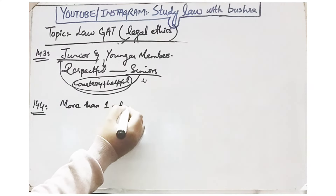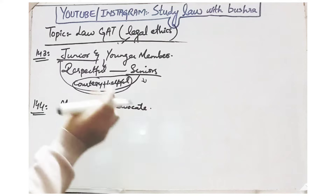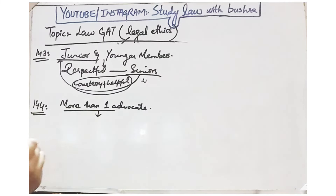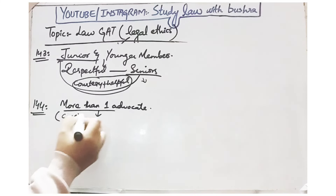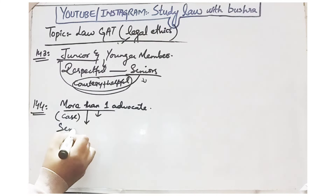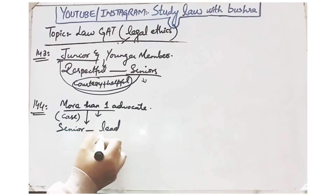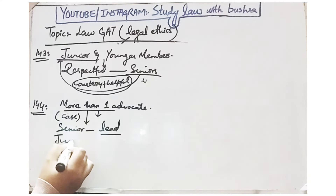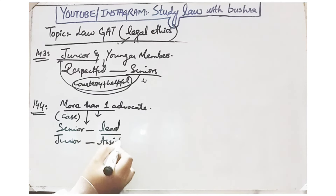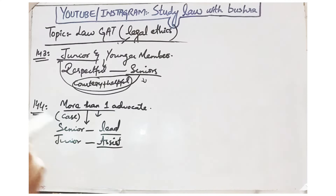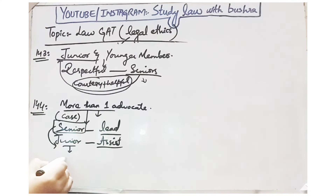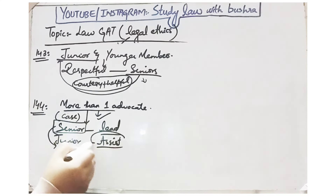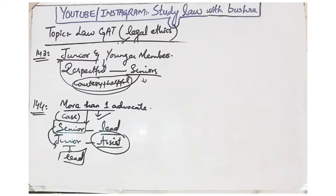Rule 144 kehta hai: where more than one advocate is engaged on one side, it is the right of the senior member to lead the case, and the junior member should assist him, unless the senior so wants otherwise. Jab ek case mein ek se zyada advocate kisi party ko represent kar rahe hain, to senior ka ye right hai ki woh case ko lead karega aur junior member usse assist karega. Agar senior chahe to junior bhi case lead kar sakta hai, warna general rule ye hai ki senior lead karega.